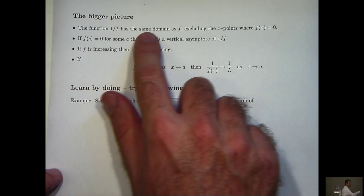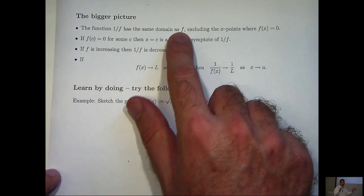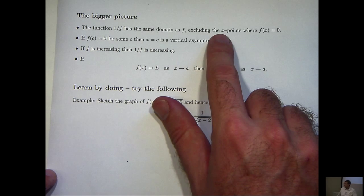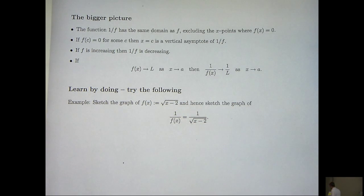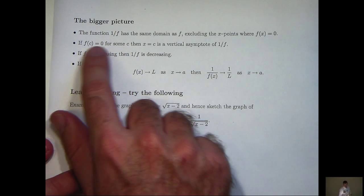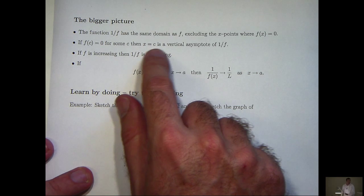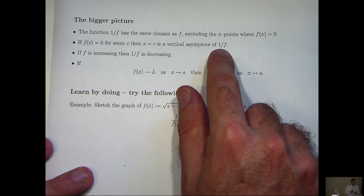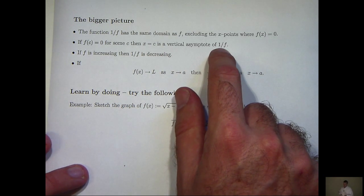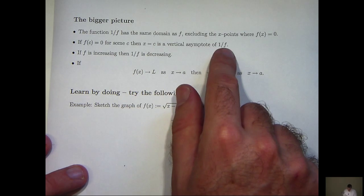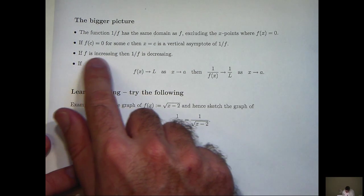Well, the reciprocal function has the same domain as the original function, except you need to exclude the x points where f of x equals 0. Again, that's because you can't divide by 0. If there is a point c where f of c equals 0, then the line x equals c is a vertical asymptote of the reciprocal function. So in the previous example, c was minus 3.